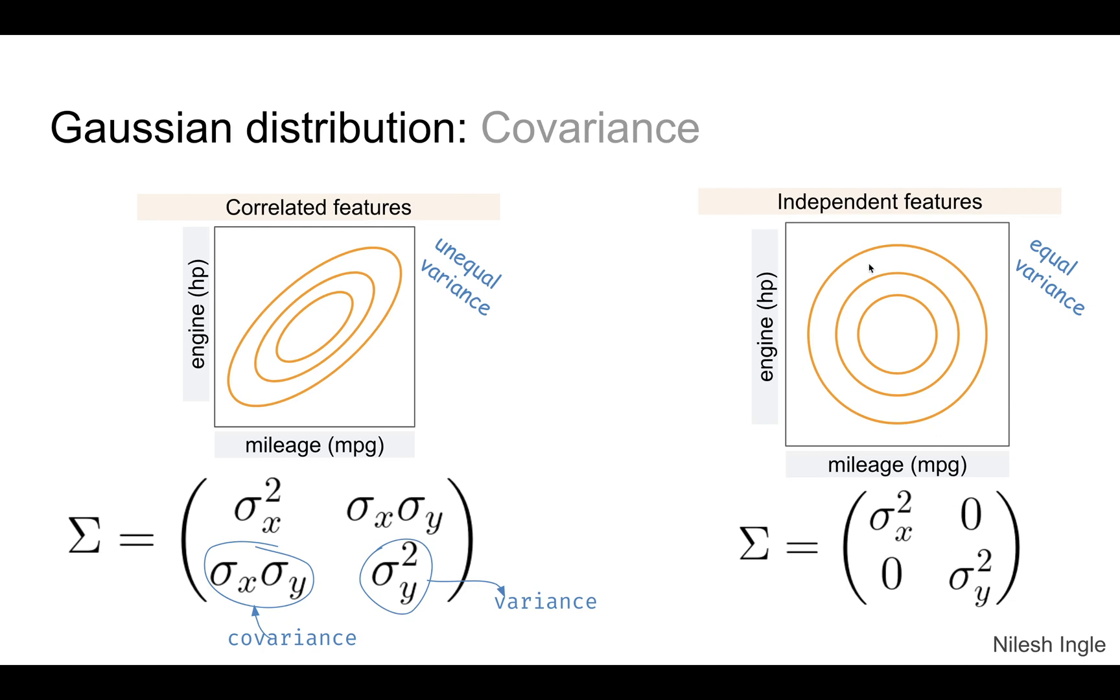In mathematical terms, on the right-hand side we have capital sigma which represents the covariance. Here we have the covariance matrix denoted by this two-by-two matrix. We have sigma squared x, that's the variance for the feature on the x-axis, miles per gallon. Then we have the variance sigma squared y for the y-axis, engine horsepower. Sigma by itself represents standard deviation, which tells us the spread of the Gaussian. The off-diagonal elements of this matrix are zero, which indicates that there is no interaction between the features.